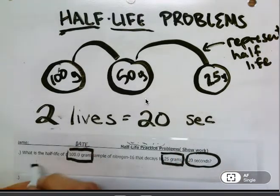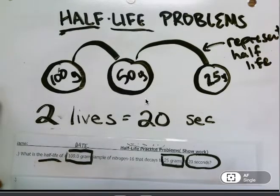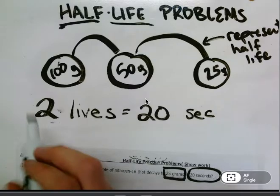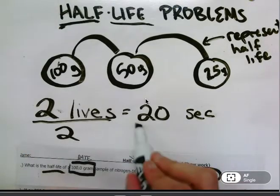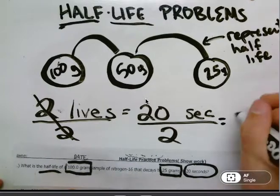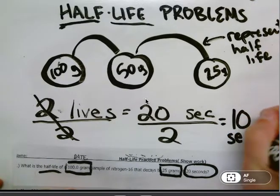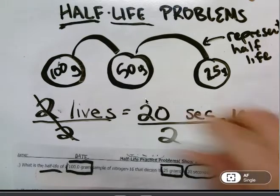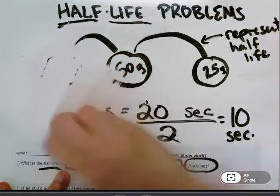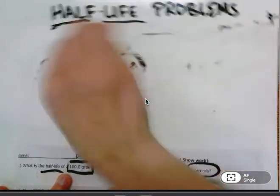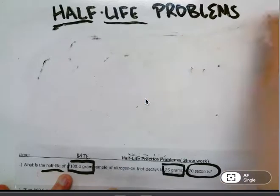So the problem is asking for one half-life. Now I just use algebra. I don't want two lives, I want one, so I'll divide both sides by two. And what I get is that one life is equal to 10 seconds. So every 10 seconds this substance, this sample, will get cut in half.